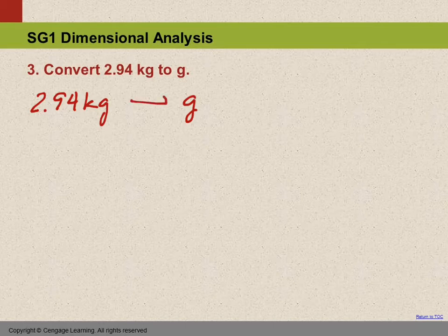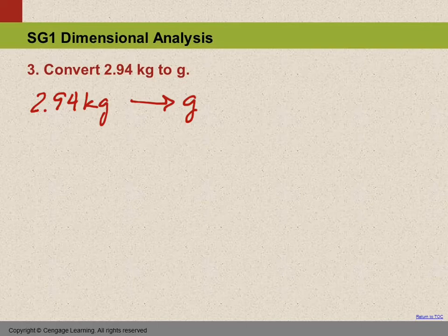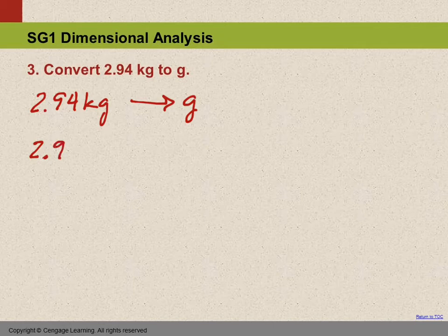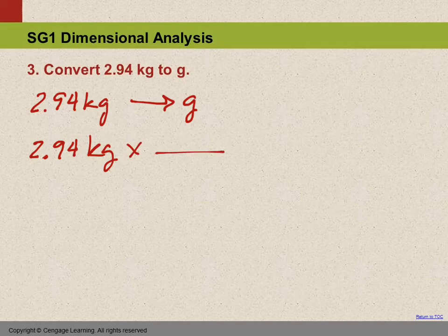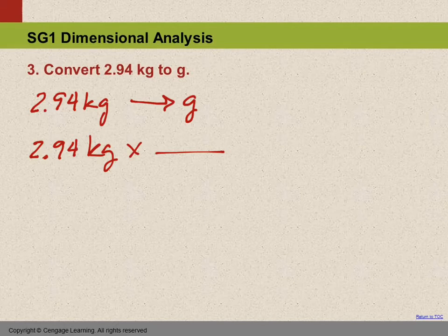So we can go directly from kilograms to grams. We write out our equation: 2.94 kilograms. We have one arrow, we have one fraction. Kilograms to grams—short path for Dora. Kilograms to grams. In our equation, we go kilograms to grams.